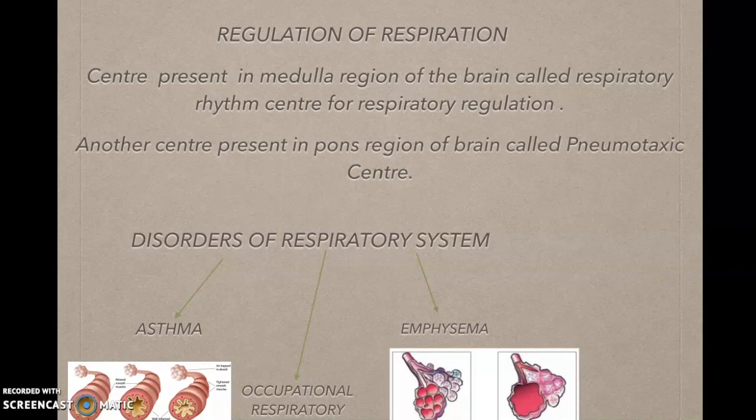Next are the disorders: asthma, occupational respiratory disorder, and emphysema. In asthma, the bronchioles — the tubes connected to the alveoli in our lungs — shrink, causing difficulty in breathing. Occupational respiratory disorder occurs in persons working in industries or factories where pollution is high, causing breathing difficulty. In emphysema, the alveoli are damaged and shed off, resulting in fewer alveoli available for respiration.